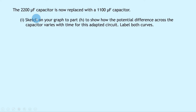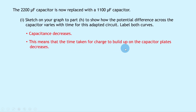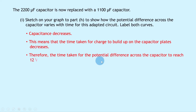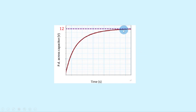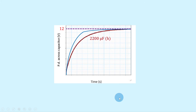Part I says the 2200 microfarad capacitor is now replaced with a 1100 microfarad capacitor, so capacitance is being halved. Sketch on the graph from part H how the potential difference varies with time for this adapted circuit, and label both curves. Capacitance decreasing means the time taken for charge to build up decreases, and therefore the potential difference across the capacitor reaches 12 volts in a shorter time. So the 1100 microfarad curve rises more steeply to the same maximum value.